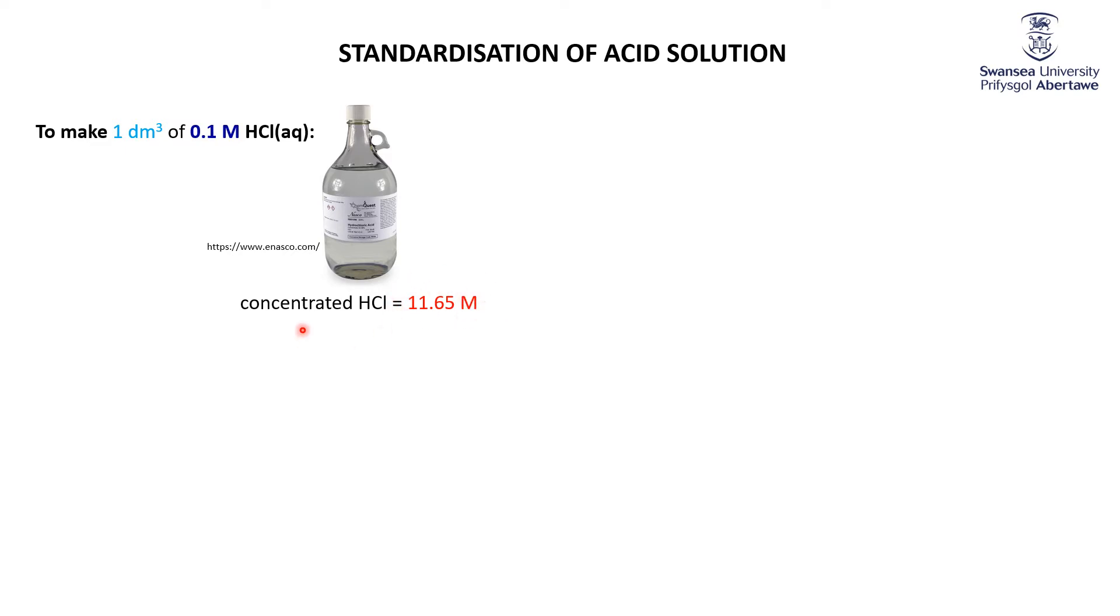And what they're going to have to do is take the right volume of this concentrated hydrochloric acid, dilute it so that you've got a cubic decimeter, a liter of 0.1 molar HCl.